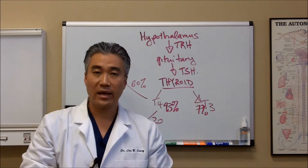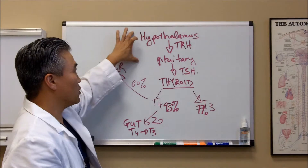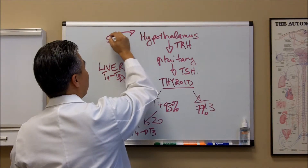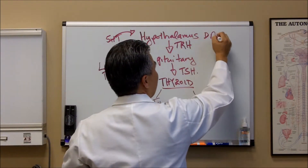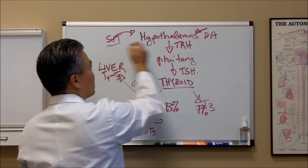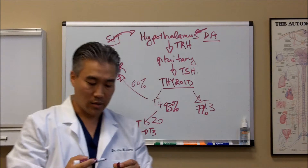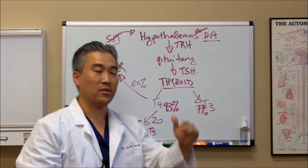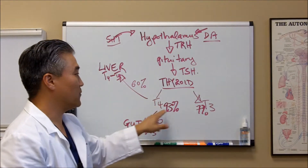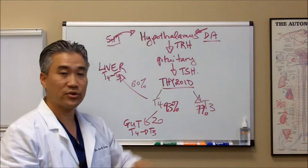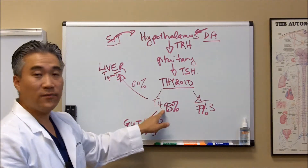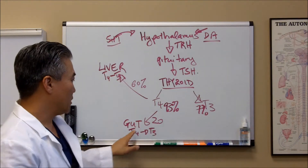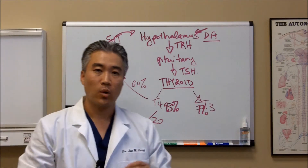When we look at thyroid physiology, we're actually looking at brain function, because the hypothalamus is impacted by two neurotransmitters — serotonin (5-HT) and dopamine. Serotonin and dopamine impact the hypothalamus, which impacts the pituitary gland, which impacts the thyroid. The thyroid releases T4 and T3 at a 93 to 7% ratio. The majority of T4 is converted in the liver, and 20% is converted in the gut.